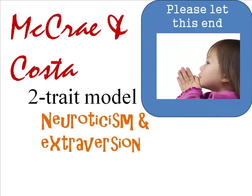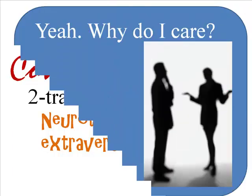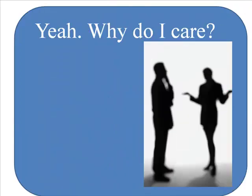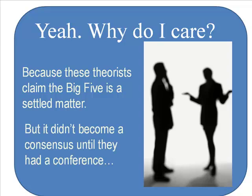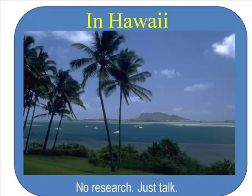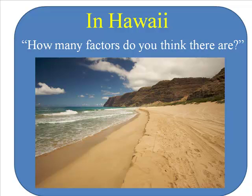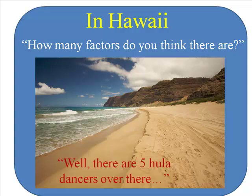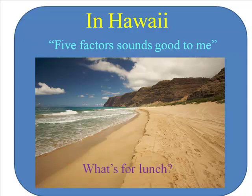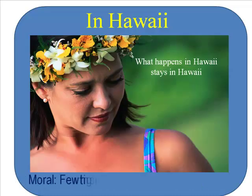Another research team, McCrae and Costa, began with a two-trait model — neuroticism and extroversion — but later added openness to experience, and still later agreeableness and conscientiousness. In their personality test, each of the five factors was composed of six subscales or facets. So extroversion is really a combination of gregariousness, activity, assertiveness, warmth, positive emotions, and seeking excitement. And agreeableness is subdivided into trust, modesty, compliance, altruism, tender-mindedness, and straightforwardness.